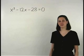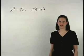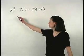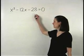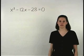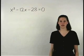When an equation has a squared term in it, such as x squared minus 12x minus 28 equals zero, it's called a polynomial equation.